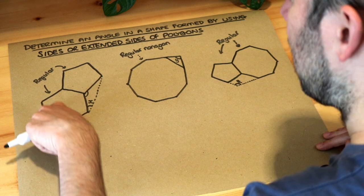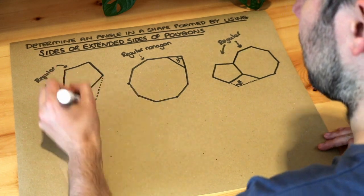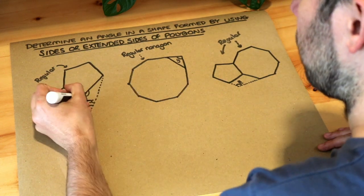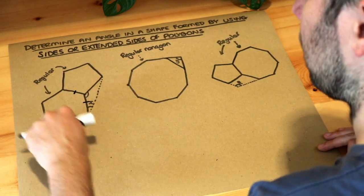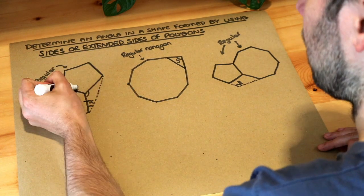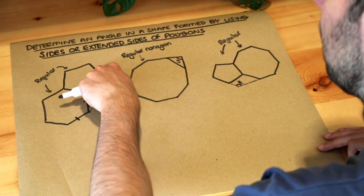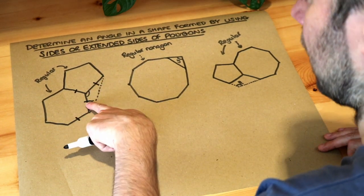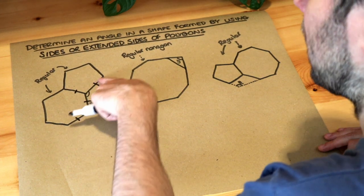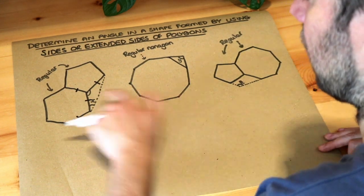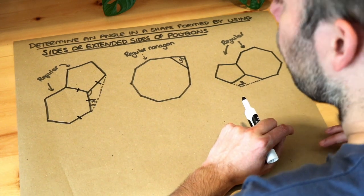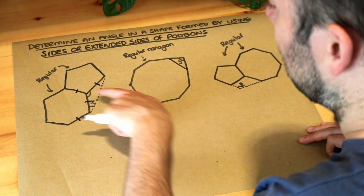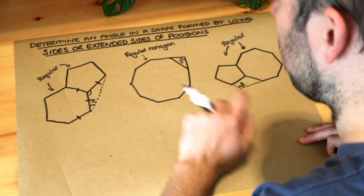If this is a regular polygon, all the sides are the same length. This side would be the same as this side, the same as this side - they're all the same length. Because this is a regular pentagon, these sides are equal, which means two sides of our triangle are the same length. So it's an isosceles triangle. We could work out this angle first, and then because we know it's an isosceles triangle, we can work out X.